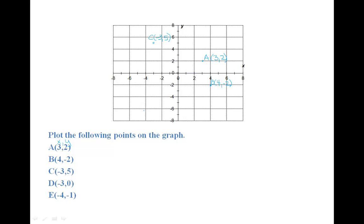D, negative three comma zero. Go over to negative three on the x-axis, and zero on the y-axis, and let's label our point.